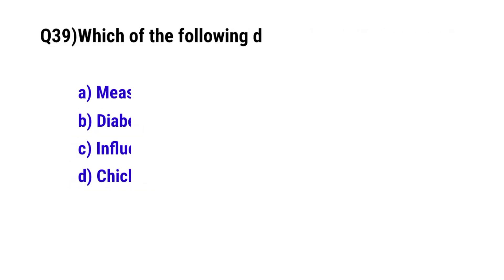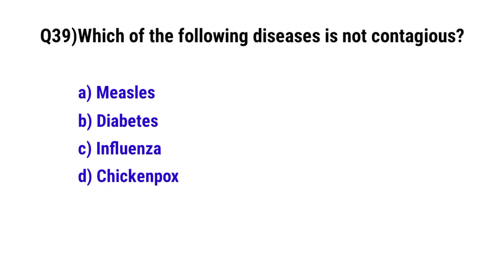Question No. 39: Which of the following diseases is not contagious? The correct option is B: Diabetes.